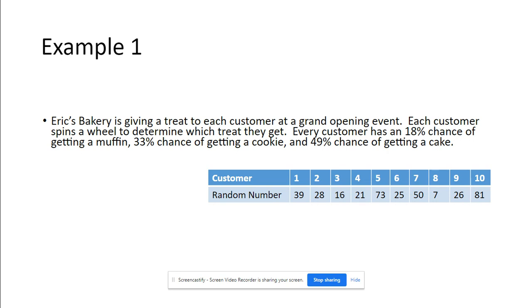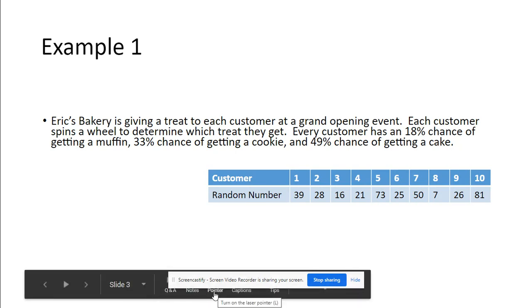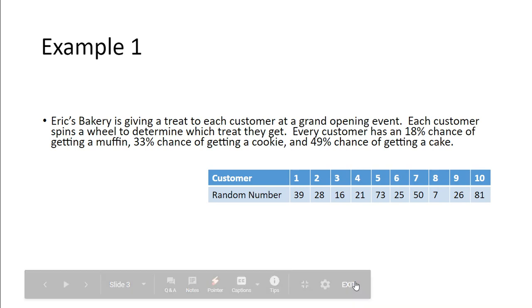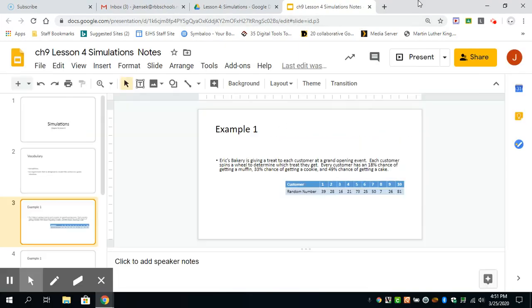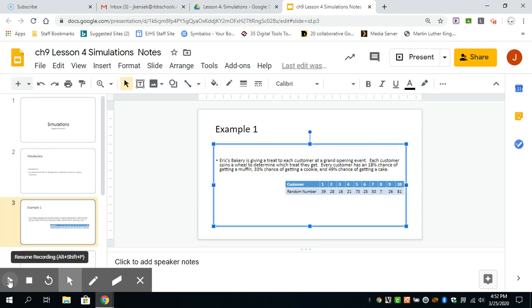So we're just going to jump straight into one of the examples here. Eric's Bakery is giving a treat to each customer at a grand opening. Each customer spins a wheel to determine which treat they get. Every customer has an 18% chance of getting a muffin, a 33% chance of getting a cookie, and then a 49% chance of getting cake. So while we are looking at this, I want to bring up this drawing tool.